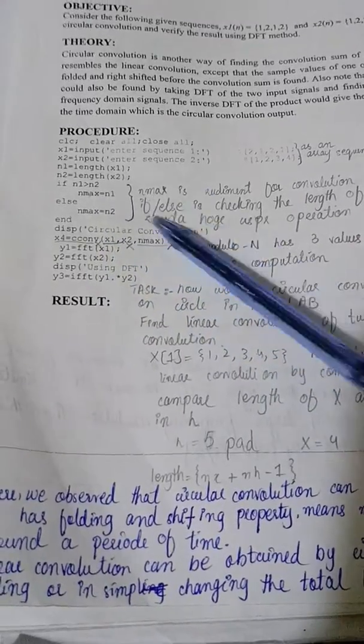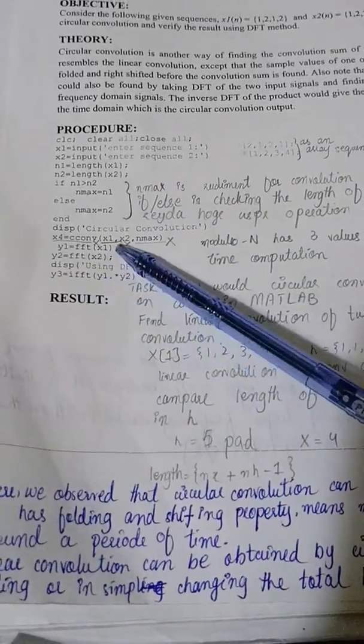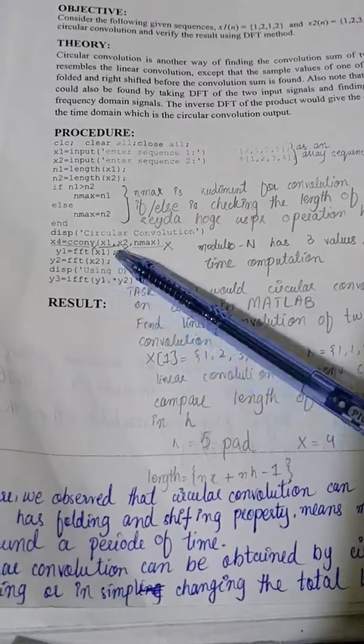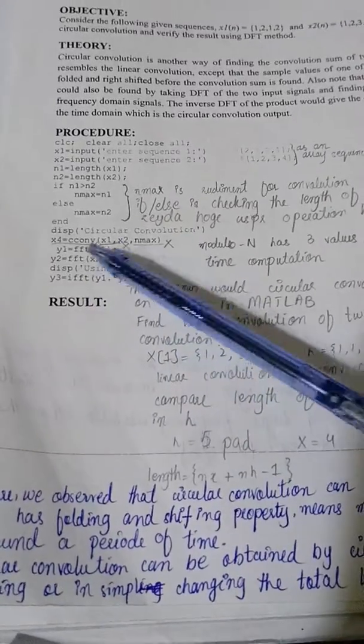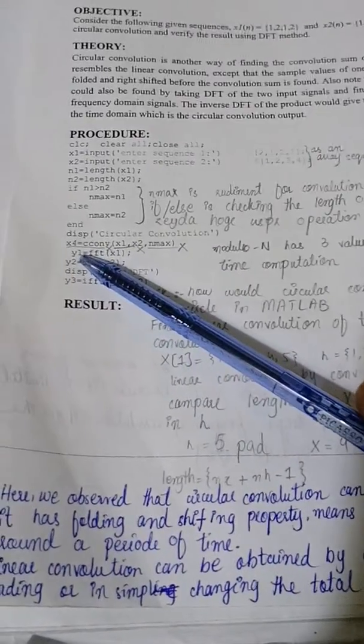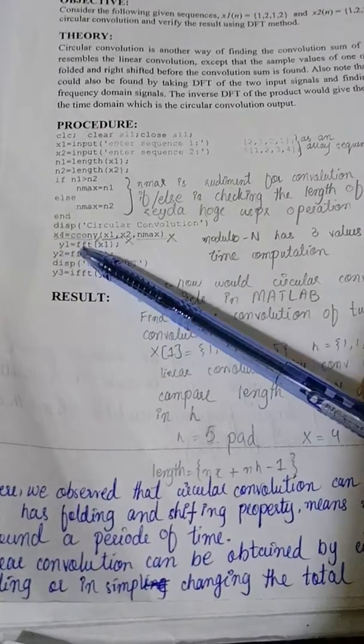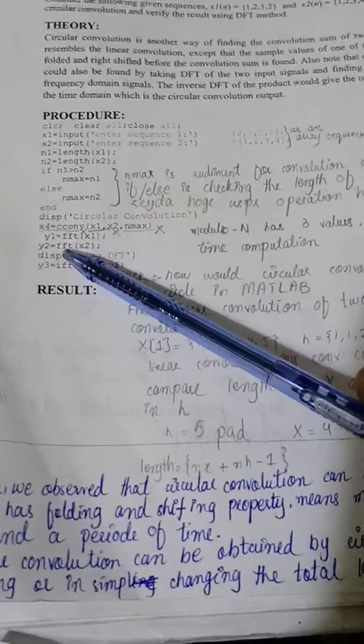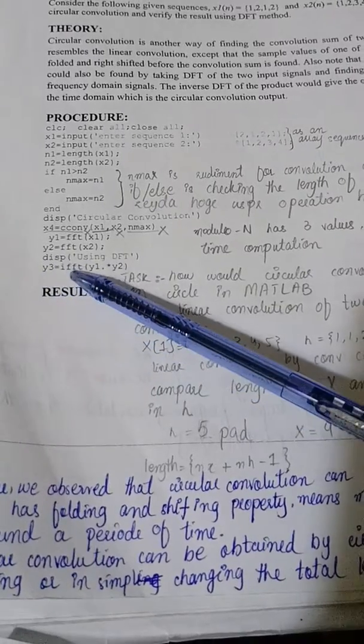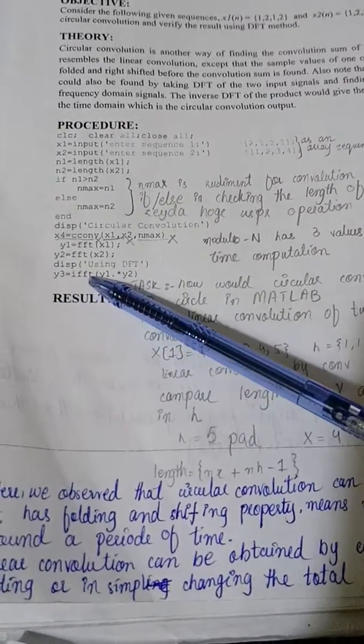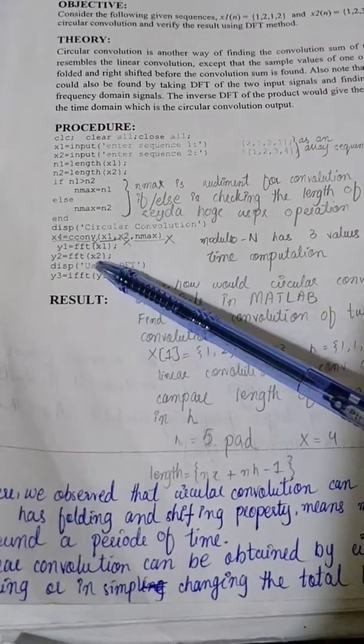And then we have performed circular convolution. This is the coding of circular convolution with the help of DFT. We have first taken the Fourier transform of x1 and the Fourier transform of x2, and then we have taken inverse Fourier transform of y1 and y2.